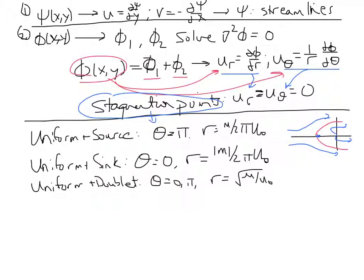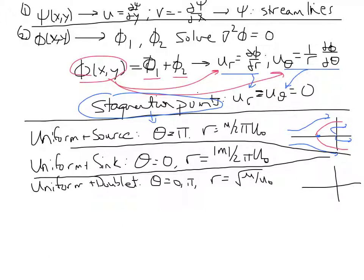In that case, I'll sketch the streamlines for that. I guess I should make it clear that uniform plus a source is this top sketch. I did not sketch uniform plus a sink. And now, uniform flow plus a doublet creates a closed streamline that is exactly a circle, and the streamlines split and move around that point. Stagnation points on the front and on the back of that circle.